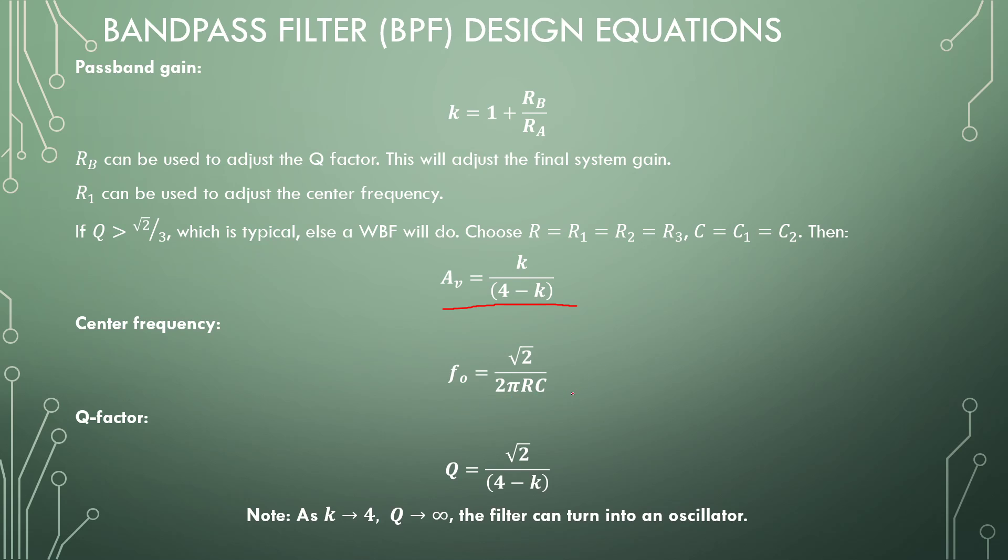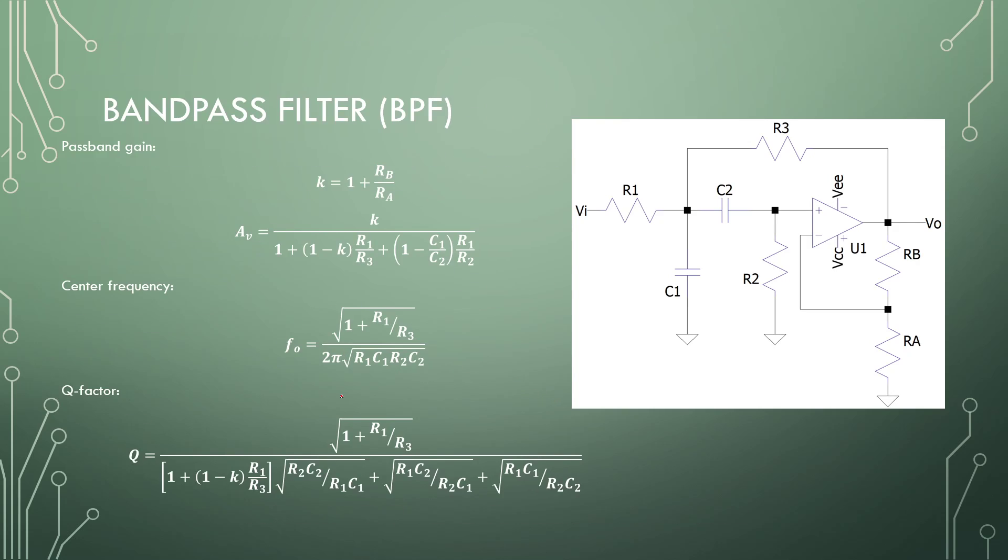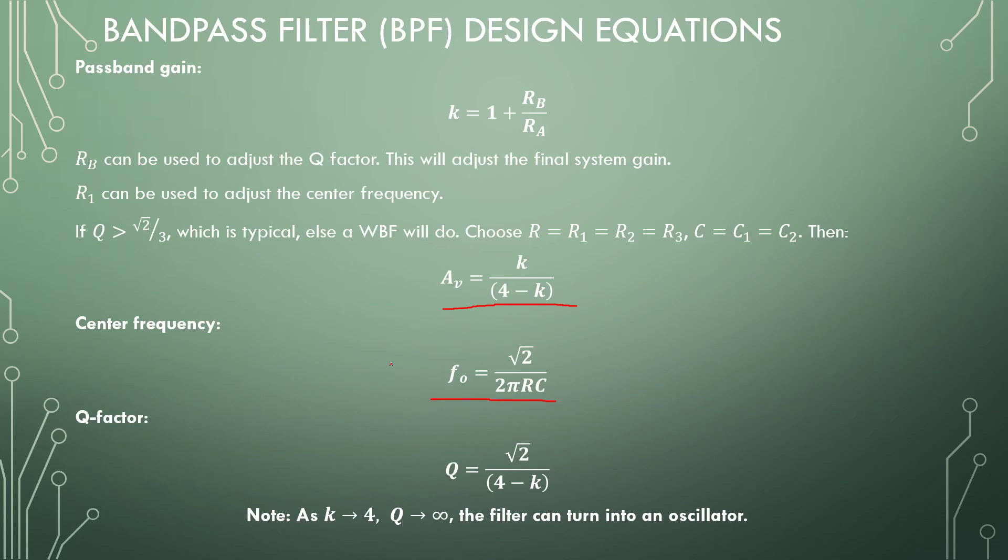So a typical design, if we made all the capacitors and resistors the same values, is root of 2 over 2πRC for our center frequency, which is much simpler than this monstrosity that we had here. And the Q-factor becomes root of 2 over 4 minus K.